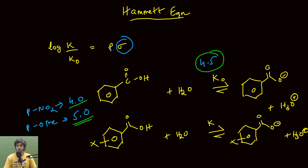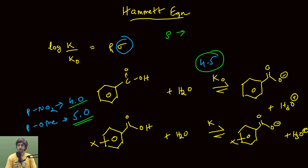Now what exactly is ρ here? Sigma tells us what effect a substituent is having upon the measured value in a reaction — here we are measuring the pKa value. So σ basically tells us the effect of a particular substituent on the reaction. But when I talk about ρ, ρ tells us to what extent σ will be creating some kind of influence.